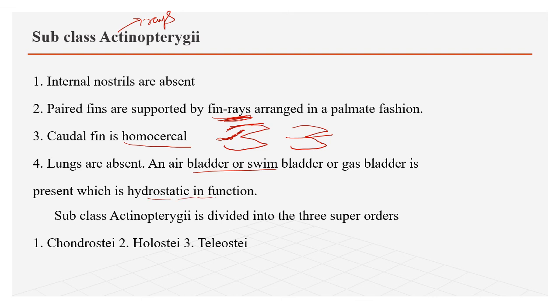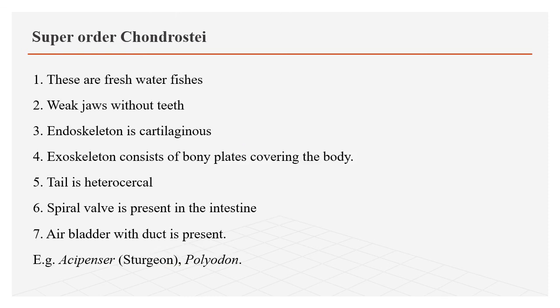Air bladder is involved in hydrostatic function. Actinopterygii is divided into three super orders: Chondrostei, Holostei, and Teleostei. Chondrostei are freshwater fishes with weak jaws and without teeth. The endoskeleton and fin rays are cartilaginous. Exoskeleton consists of bony plates covering the body. The tail is somewhat heterocercal. Spiral valve is present in the intestine. Air bladder with duct is present. Examples: Acipenser, Polyodon (sturgeon).